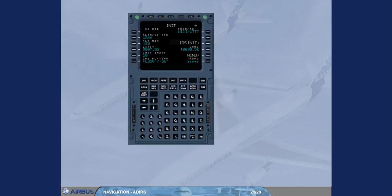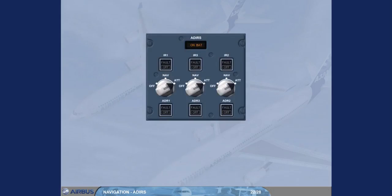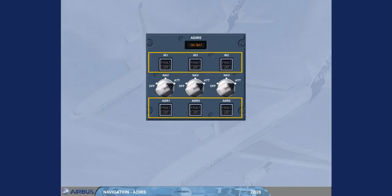Present position information for ADIRS alignment is normally entered via the init page of the MCDU. The ATT position of the ADIRS selectors allows the selection of the IR mode, providing only heading and attitude information. In case of loss of navigation capability, the three ADR switches normally remain on but can be selected off in response to ECAM procedures — this only stops the ADRs, not the IRs. The three IR switches operate in the same way for the IRs.